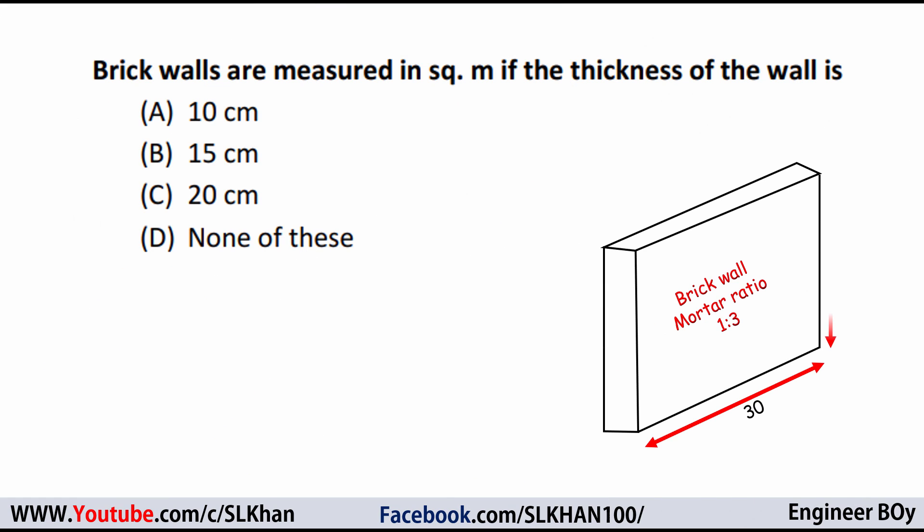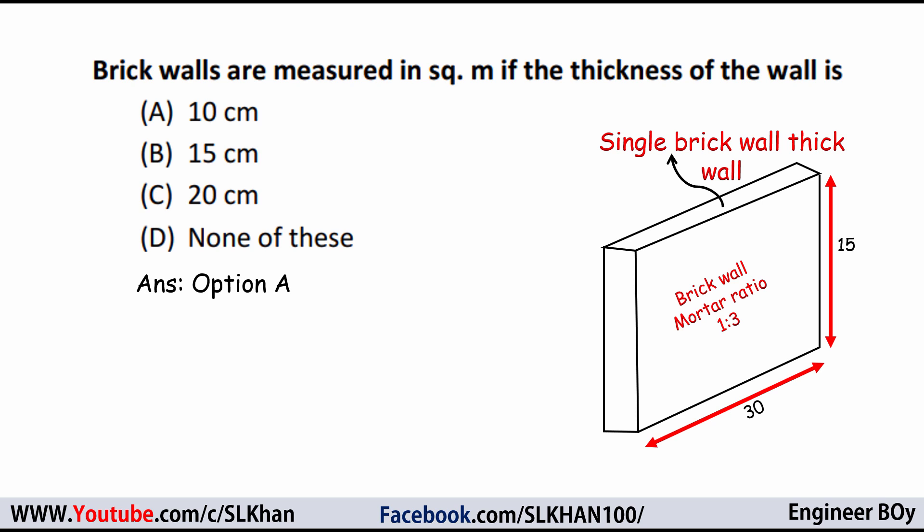Another question: brick walls are measured in square meter if the thickness of the wall is 10 centimeter, 15 centimeter, 20 centimeter, or none of these. Remember, brickwork is always measured in cubic meter or cubic feet — in the form of volume. But when the thickness is less, it's just calculated in area. When it's a single brick wall, it's measured in square meter. That can be option A, which is 10 centimeter. When the wall is 10 centimeter or less, we take that as a correct option. So I'm happy with option A, which is 10 centimeter.